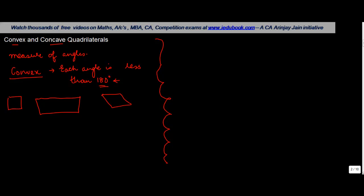So these are basically your convex quadrilaterals. In case of concave quadrilaterals, one of the angles is more than 180 degrees. So how would such a thing look like?